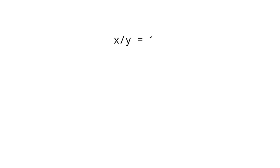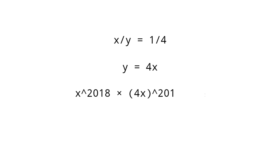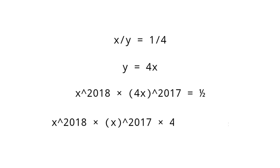So x by y equals 1 by 4, or y equals 4x. Substituting y equals 4x in equation 1, we get x raised to 2018 into (4x) whole raised to 2017 equals 1 by 2. That gives x raised to 2018 into x raised to 2017 into 4 raised to 2017 equals 1 by 2.